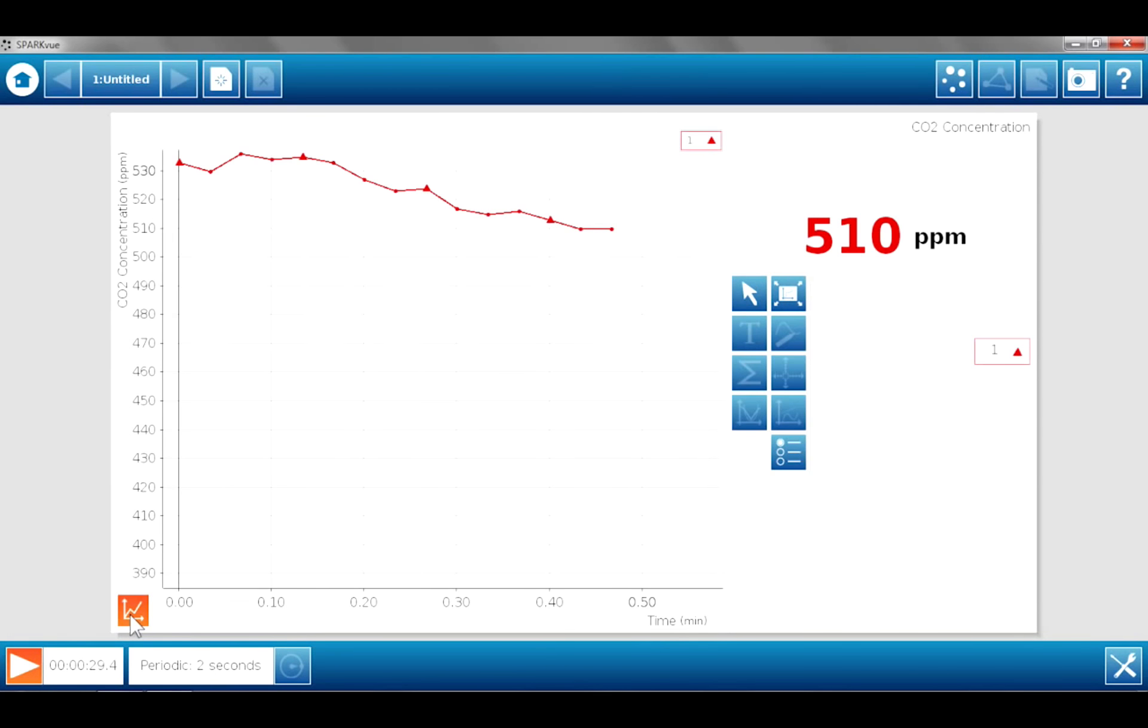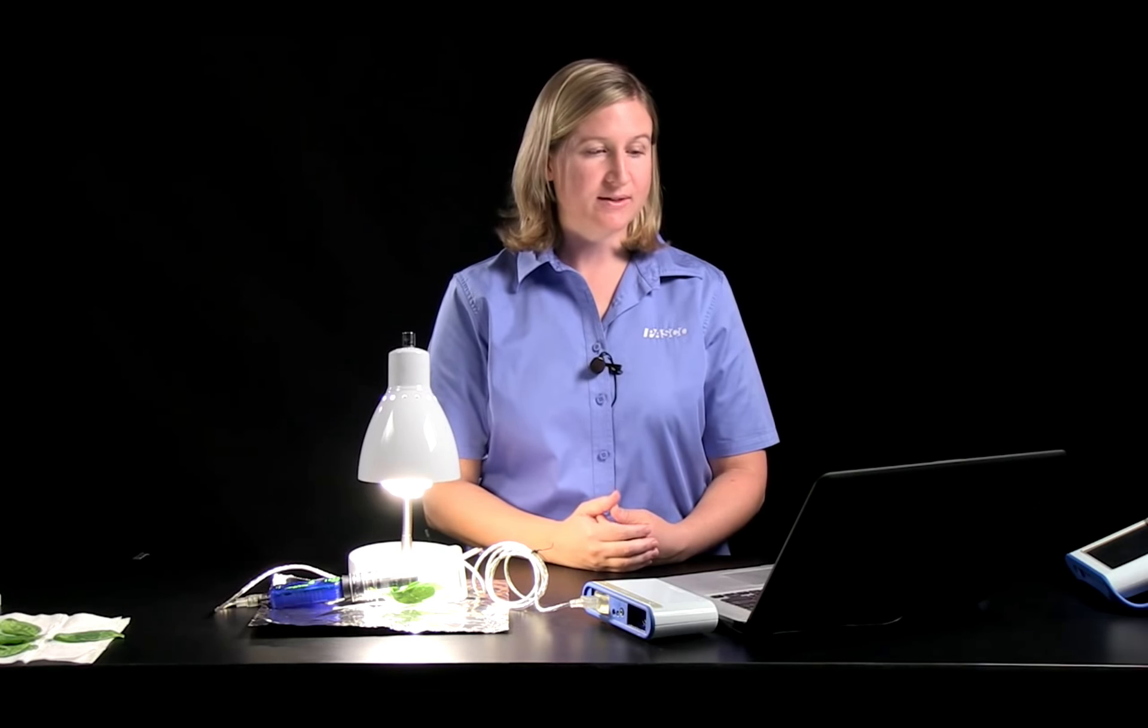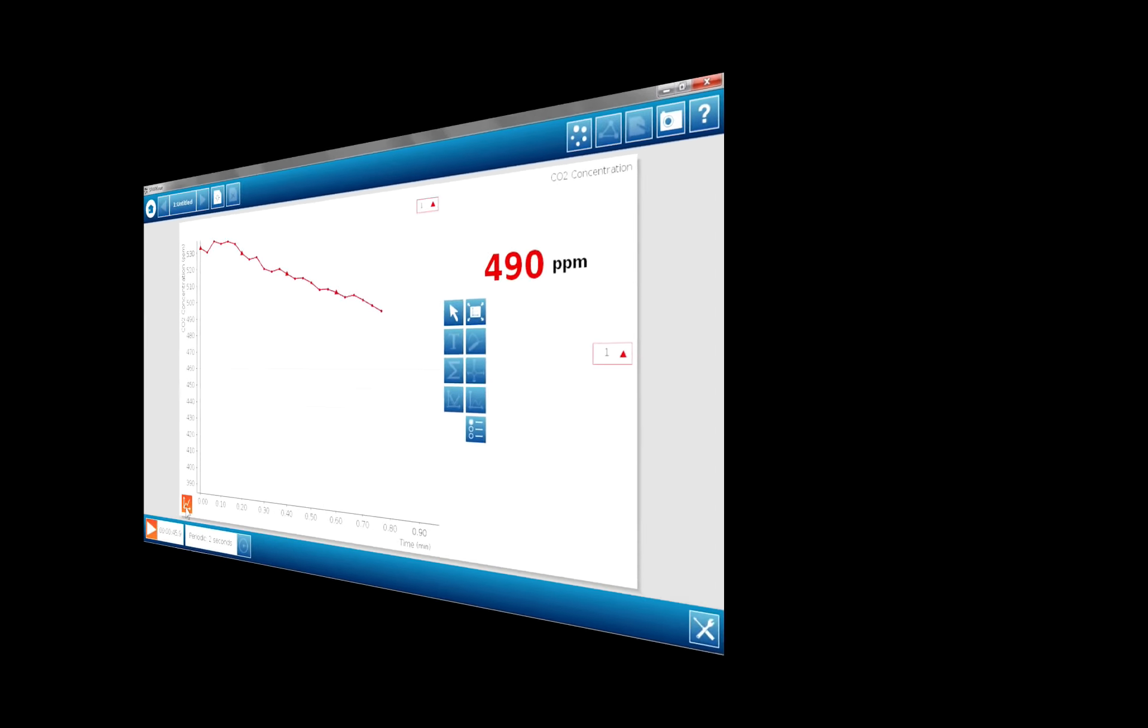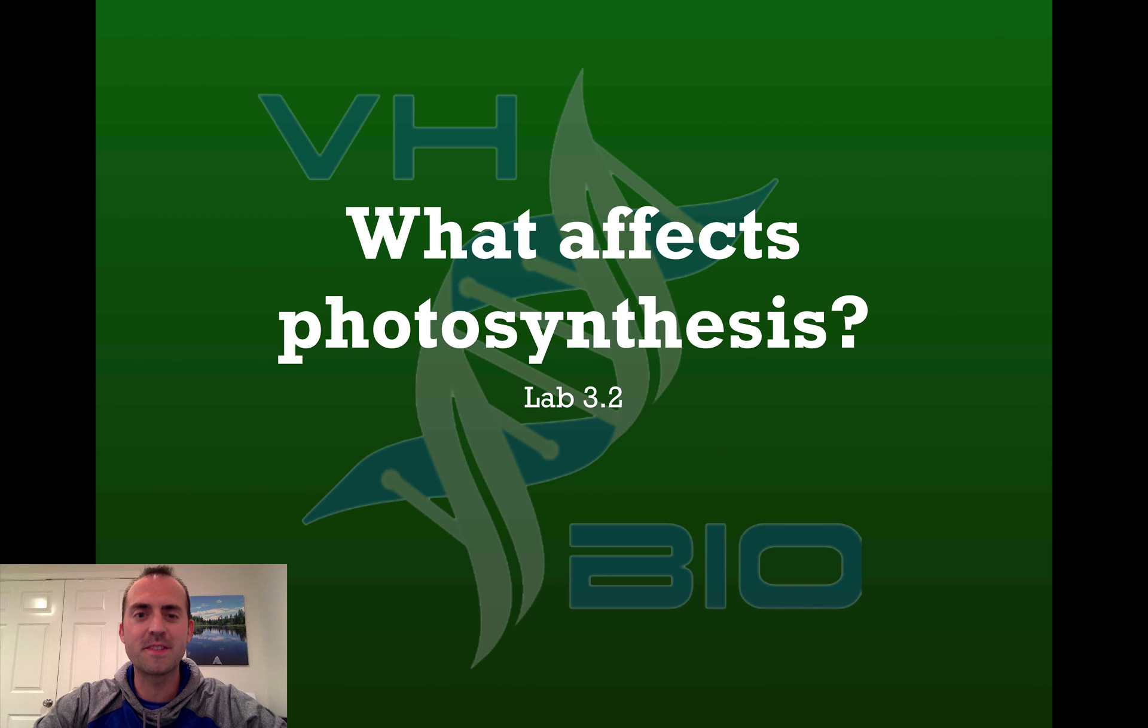And as the data is collected, the scale of the y-axis will adjust to the new data points. You can also see in the upper right-hand corner a display of the carbon dioxide concentration in parts per million. And you can see how that is changing as time goes on.